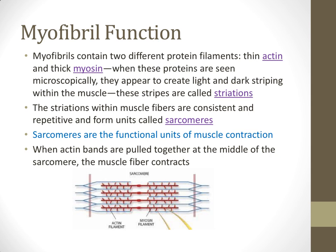Inside the myofibril, we have two very important proteins. There is a thin actin protein — shown in blue in the picture — and thick myosin filaments, shown in red. They are stacked: actin, then myosin, then actin, then myosin, and so on. When you look at that under a microscope, it looks like a striping band, sort of like tiger stripes or zebra stripes. In science, we call that striping striations.